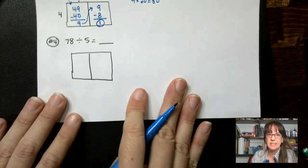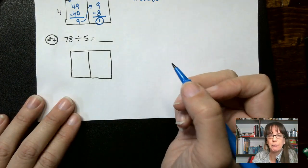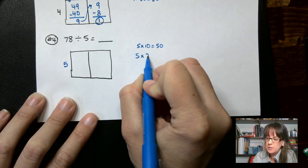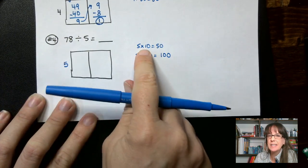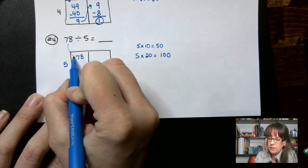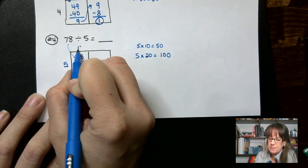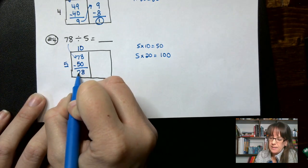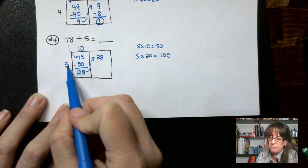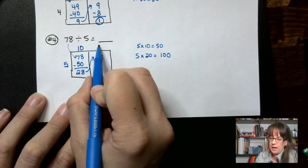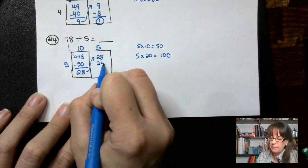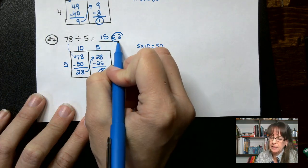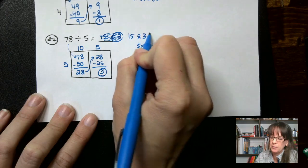Let's look at number 4. If you think you've got the hang of this, you can always pause the video, try it on your own, and then come back to see if you got it right. We have 5 in the 10s column. 5 times 10 is 50; 5 times 20 is 100 — we're trying to get to 78, so the best we can do is one group of 10. 50 goes into 78 one time, giving us 50. Subtract: we get 28. How many times does 5 go into 28? If you said 5, good job — 5 times 5 is 25 — giving a remainder of 3. Add up: 15 remainder 3.